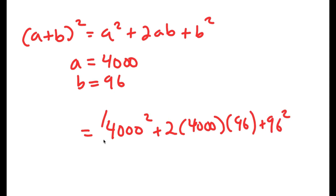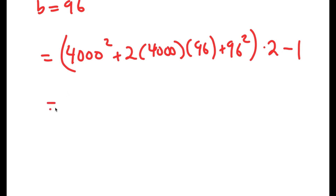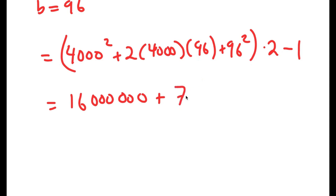I have all of this times 2 minus 1. Now, 4000 squared is equal to 16 million. 2 times 4000 is 8,000, and 8,000 times 96 is equal to 768,000. And I have this plus 96 squared, which is equal to 9,216, and all of this times 2 minus 1.